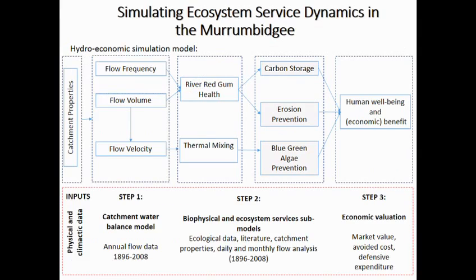To do this, we construct a hydro-economic model. We begin with a really simple water balance of the Murrumbidgee catchment with two nodes — two dam nodes — and inflows, outflows, and evaporative losses. Our definition of environmental water is anything left in the river, plus return flows, plus anything we allocate. So under baseline conditions, we have a zero percent allocation.